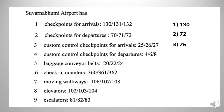Exercise number 4: customs control checkpoints for departures. The number options are 4, 6, and 8. The correct answer is 8. Number 5: baggage conveyor belts. The options are 20, 22, and 24. The correct answer is 22. Exercise number 6: check-in counters. The options are 360, 361, and 362. The correct answer is 360.